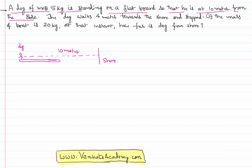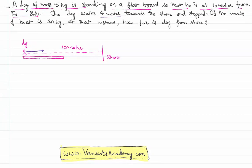What happened is this dog started walking forward. It has moved a distance of 4 meters. The question is: what is the new distance between the dog and the shore? In a simple way it appears like the total distance is 10 meters, the dog has moved 4 meters, so the new distance is 6 meters. But that's not the case.